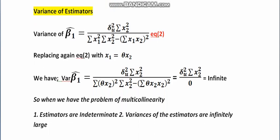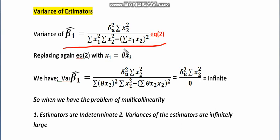Now let's look at what happens to the variances of the estimators in the multiple regression model having the problem of multicollinearity. We have already derived the variance formula. The variance of beta 1 hat is sigma u squared times summation x2 squared in the numerator, divided by summation x1 squared times summation x2 squared minus the quantity summation x1x2, whole squared.